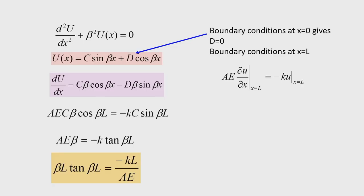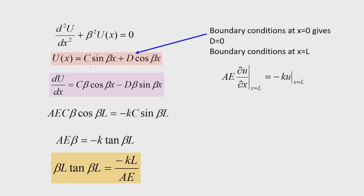The solution of this differential equation is well known. It gives two harmonic functions — sine and cosine — because the characteristic equation has complex roots. After collecting the coefficients, we write U(x) = C sin(βx) + D cos(βx), where C and D are constants of integration to be found from the boundary conditions.